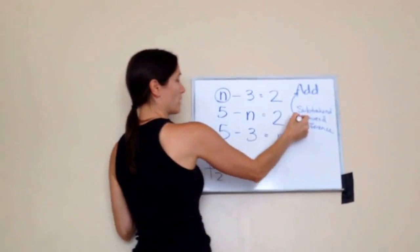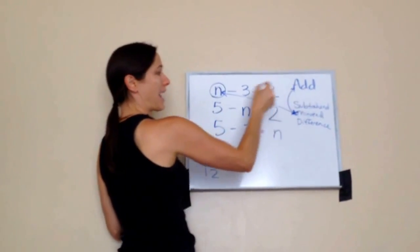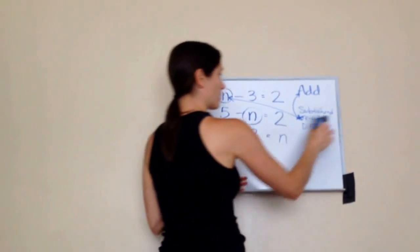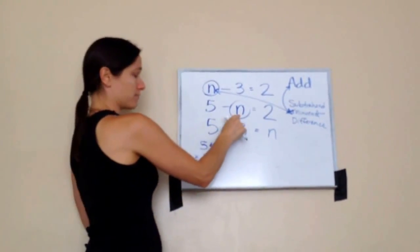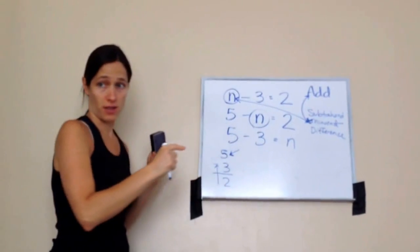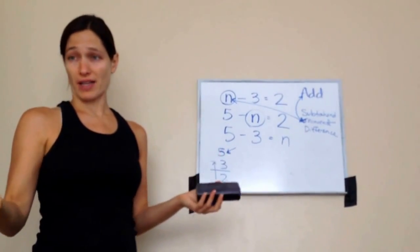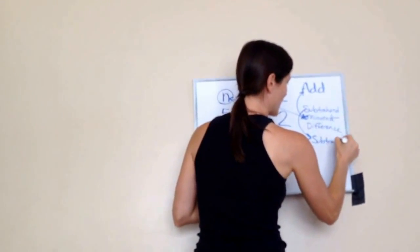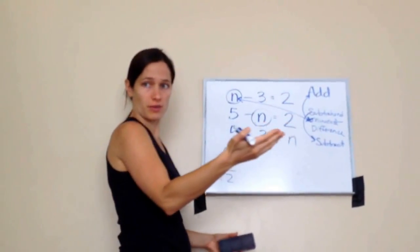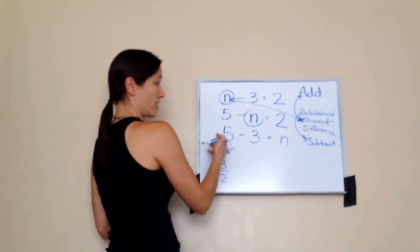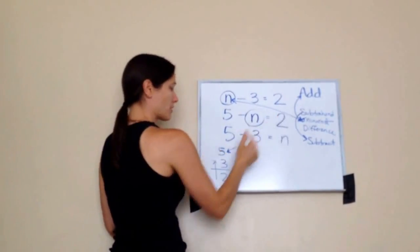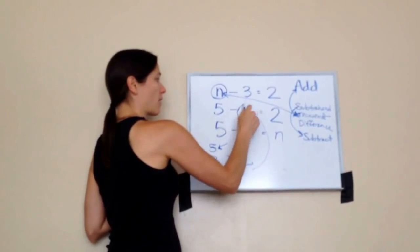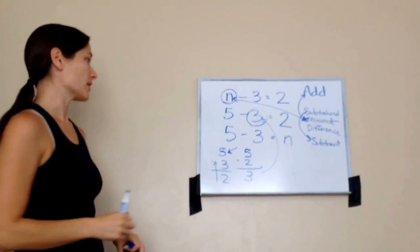Now let's look at the missing subtrahend. When you have a missing subtrahend, you're actually going to subtract. Subtrahend — subtract — see what I'm saying? So take the highest number, 5, minus the lowest number, 2, and we get 3. Put 3 back in: does 5 minus 3 equal 2? Yes, it does.